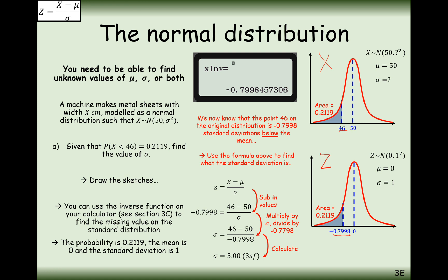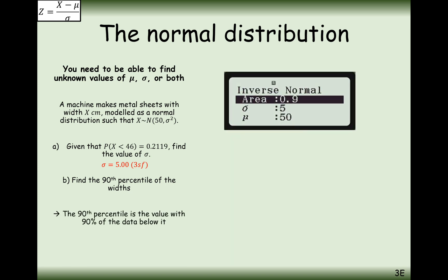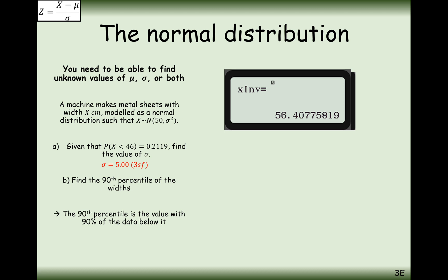We've seen finding the mean and finding the standard deviation. Now for part B: find the 90th percentile of the widths. The 90th percentile has 90% of the data below it, so use the calculator with 0.9 as the area, standard deviation 5 and mean 50. The answer is 56.4.